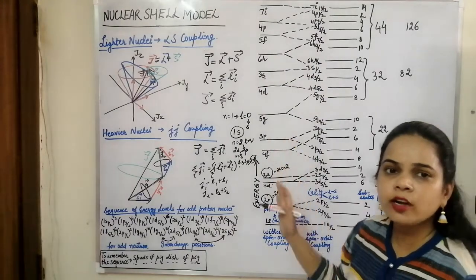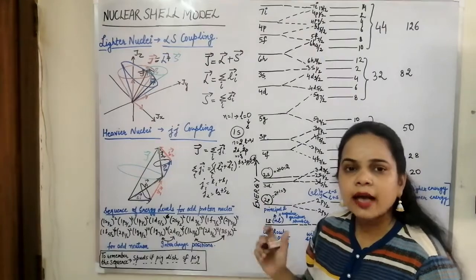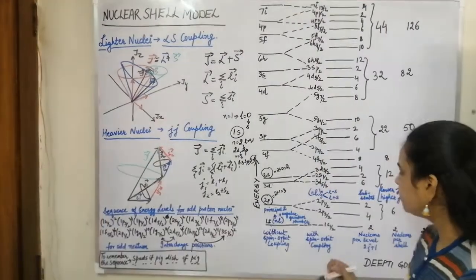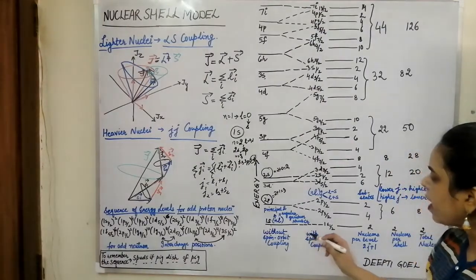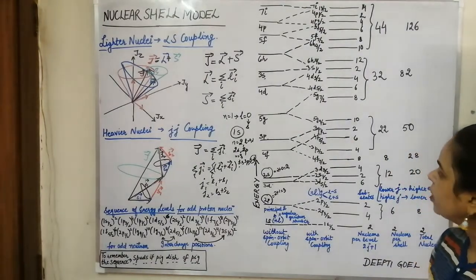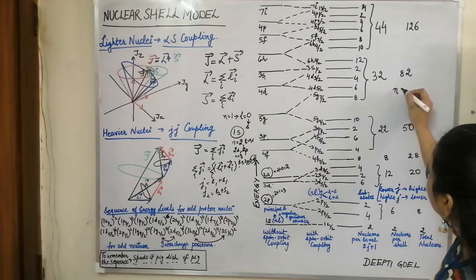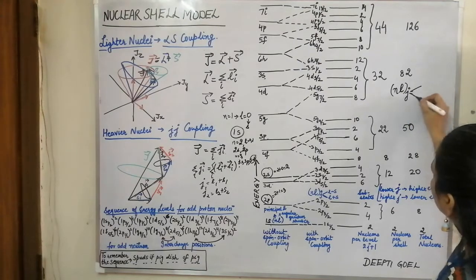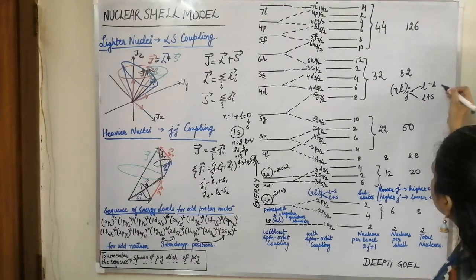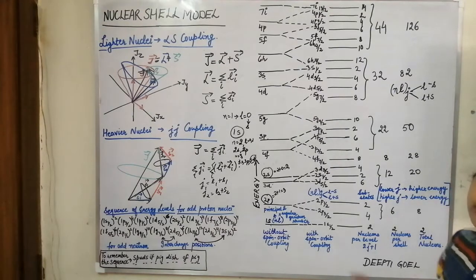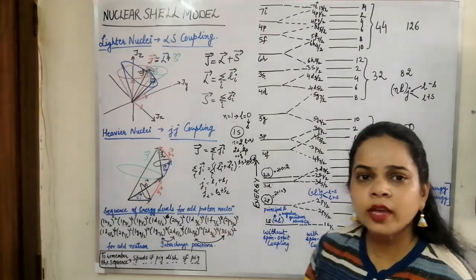When we consider spin-orbit coupling, the levels further divide. The representation becomes NLJ, where J can take two values: L plus S and L minus S. The spin of the nucleon can be either up-spin or down-spin, taking values of plus half or minus half.